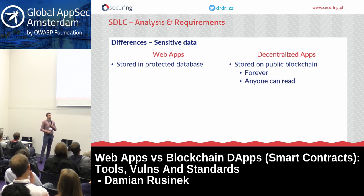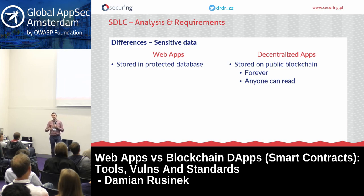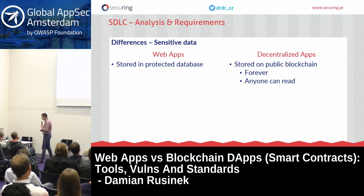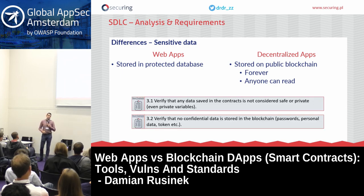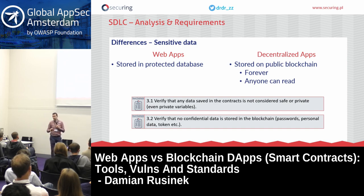What about the differences? The first is about sensitive data. For web applications, we can keep sensitive data in a database and protect it. In decentralized applications, it's not that easy because all data is on public blockchain — everything is readable and publicly accessible. That's why you must make sure no confidential data is kept in smart contracts, like passwords or personal data. No data is considered safe, even if you use a private keyword for your storage variables.